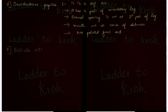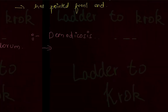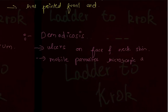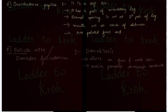The next organism is the follicle mite, also called Demodex. It is a skin disease where you will see ulcers on the face and neck skin. They actually affect the hair follicle — that is why it is known as the follicle mite. They are mobile parasites which are microscopic arachnids, meaning spider-like organisms.